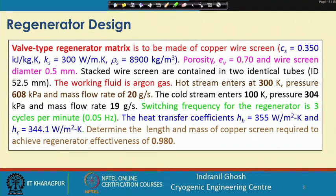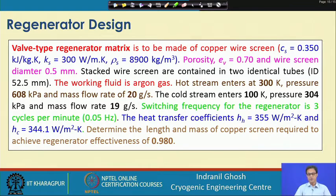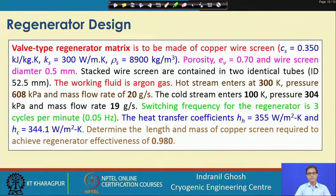This is a valve type regenerator with a matrix made of copper wire screen. This is something new — we have talked about packed bed spheres before, but here the copper wire screen is used as the matrix. For this copper wire screen, the porosity is about 0.7 and the wire diameter is 0.5 millimeter. It is a woven screen.